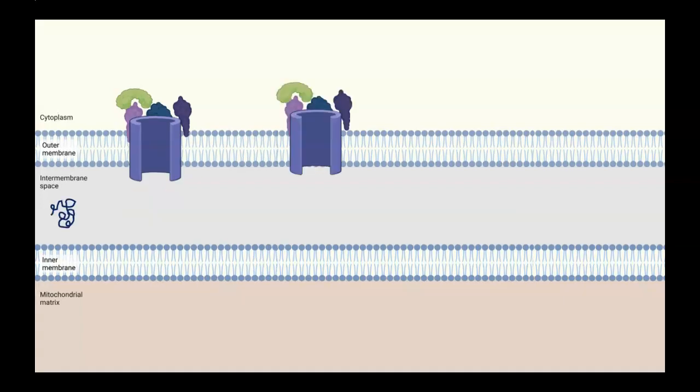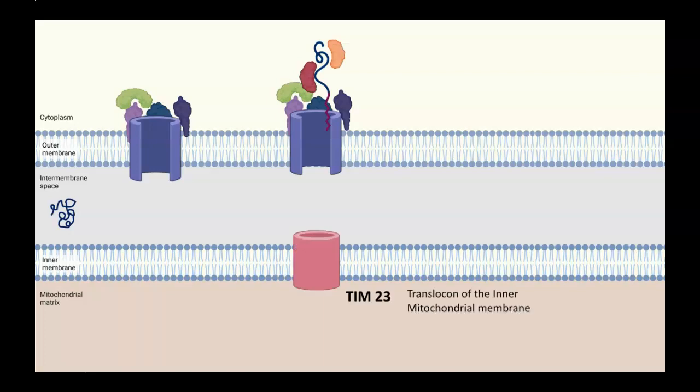Other proteins are destined to work in the matrix. Let's look at their import. Once again, it begins with the binding of the protein to TOM in the outer membrane. Now, to get it into the matrix, we're going to need a second complex called TIM, the translocon of the intermitochondrial membrane, and there are two different forms of TIM. The one involved in making matrix proteins is TIM-23. TIM-23 is another big complex. It doesn't work by itself.